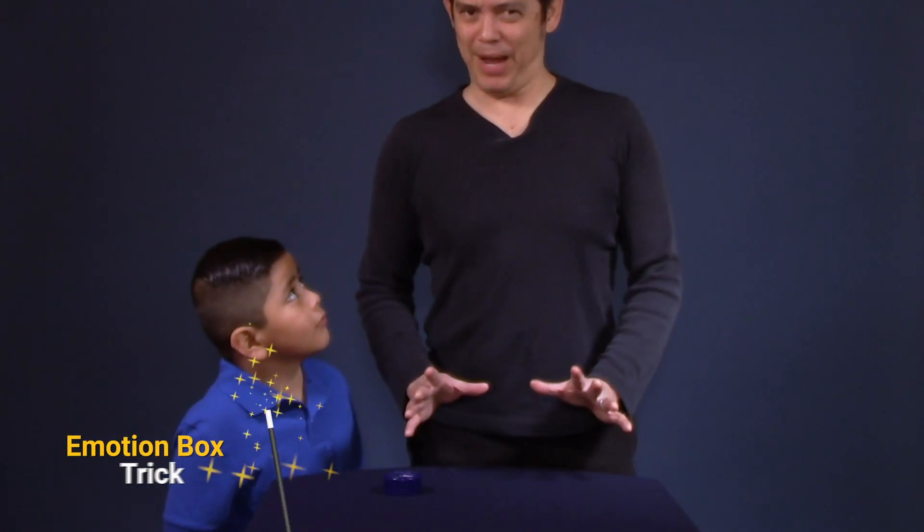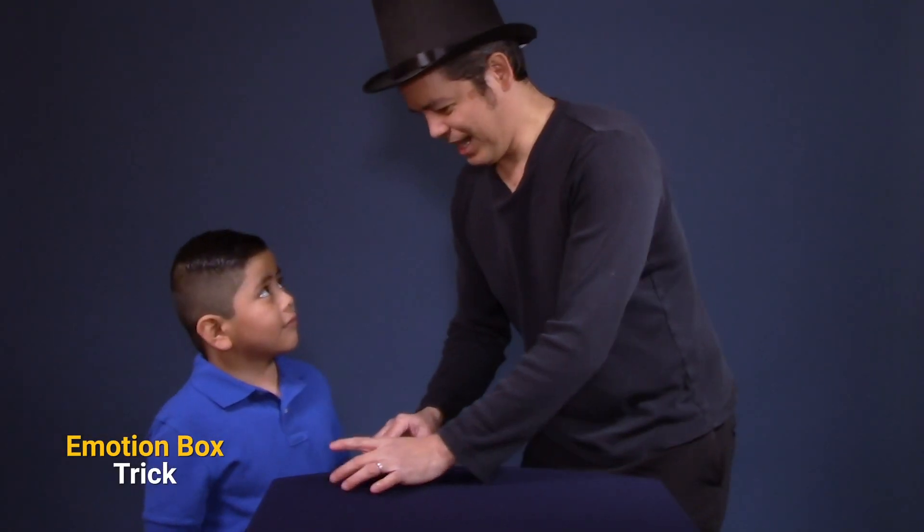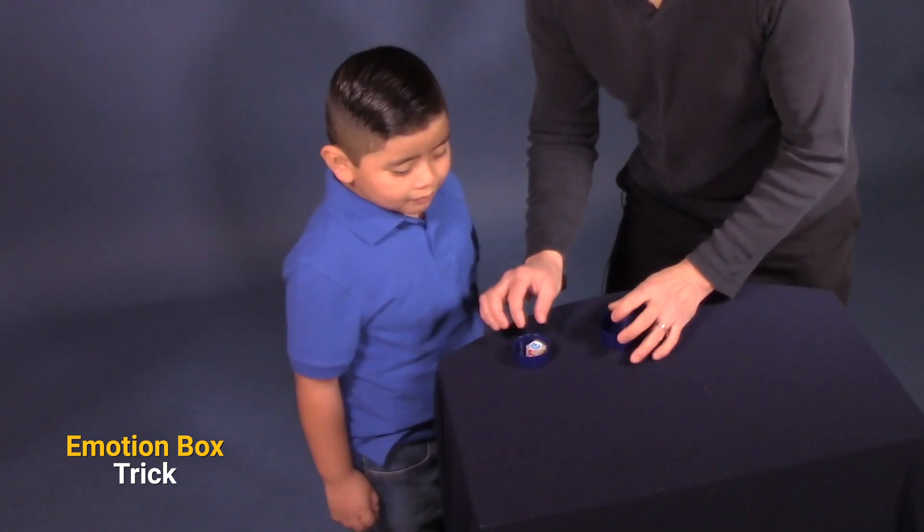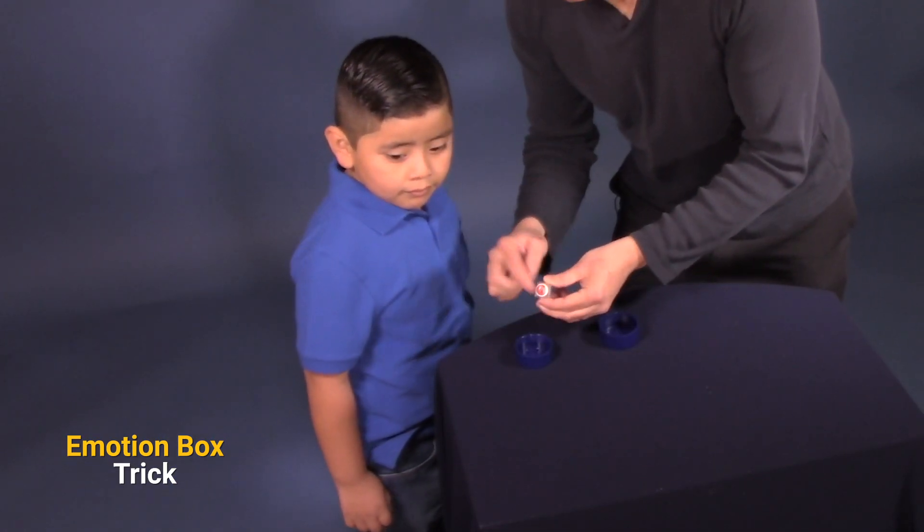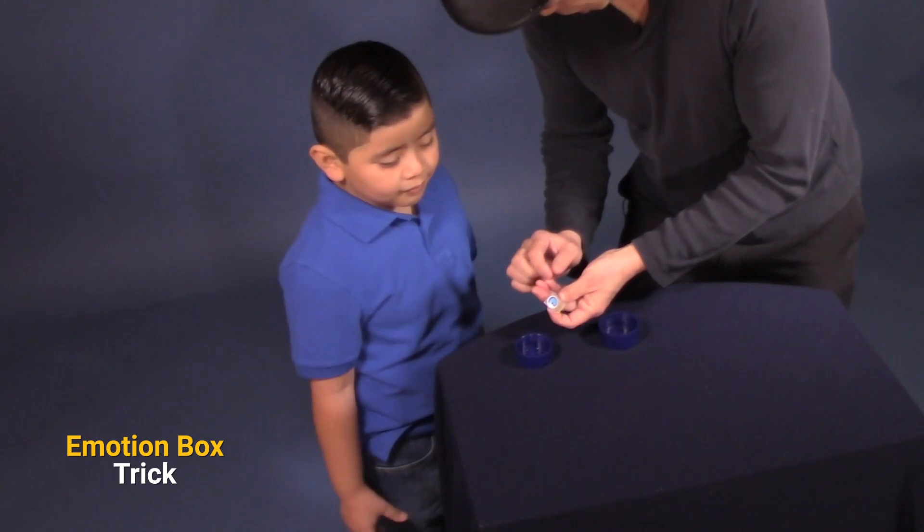The Mind Reading Emotion Box. All right, sir. I've got this box here and inside the box is a cube with three emotions. There's angry, happy, and sad.